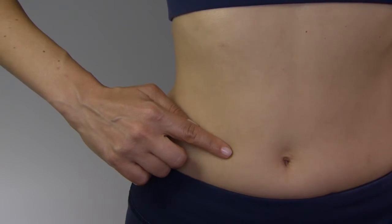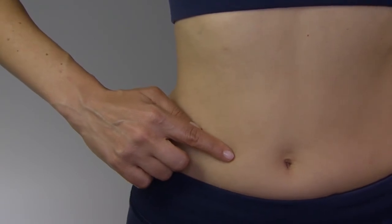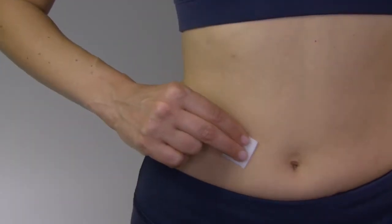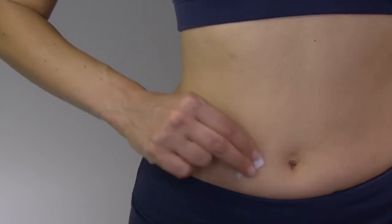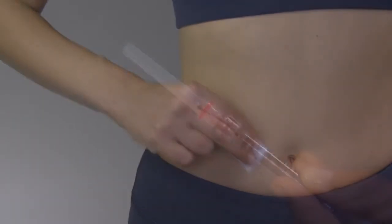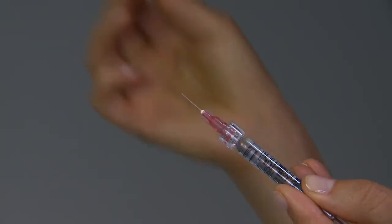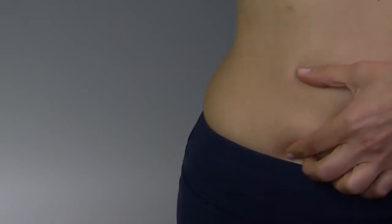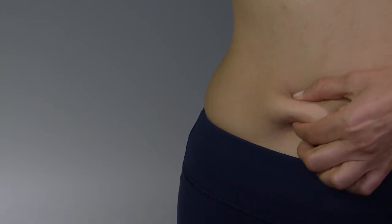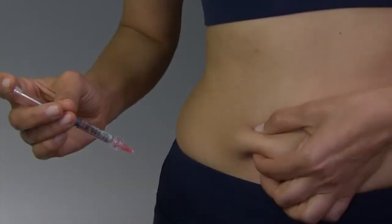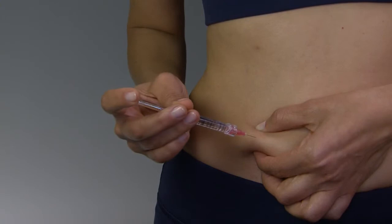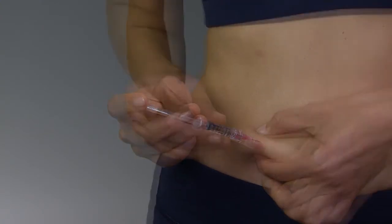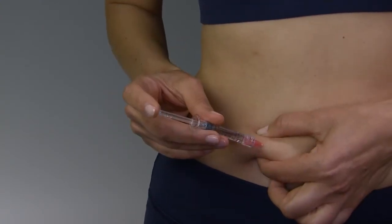Your health care provider will have discussed a suitable injection site with you. Clean the recommended injection site with an alcohol swab and allow it to air dry. Uncap the injection syringe. Hold the syringe in one hand the way you would hold a pencil. With the other hand, pinch the skin around the injection site. Insert the entire length of the needle completely straight into the skin at a 90-degree angle.